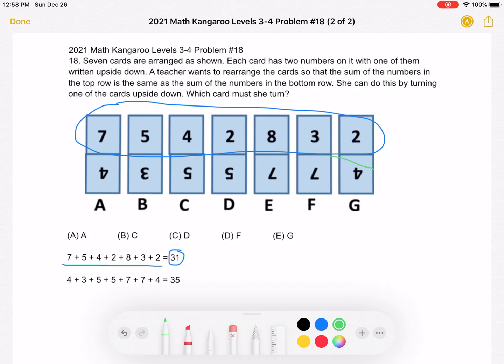Next I found the sum of the numbers in this bottom row. 4 plus 3 plus 5 plus 5 plus 7 plus 7 plus 4 is equal to a total sum of 35.